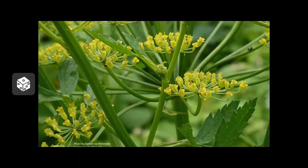Moving on to the important question of how to tell when these two flower phenophases have ended: flowers that have passed these phenophases are considered to be spent. We can recognize this by withered and dried flower parts, or if petals are drying or have dropped off. In this image, we see that the flower petals are either drying or dropped off, meaning that the plant has exited both flower phenophases.